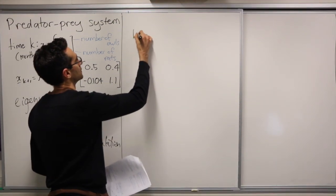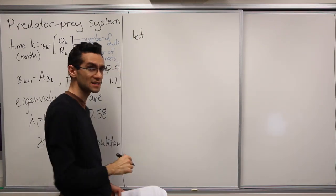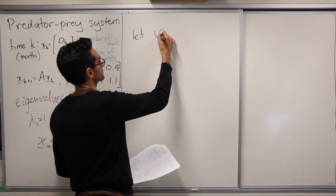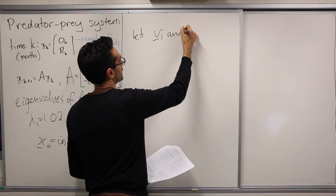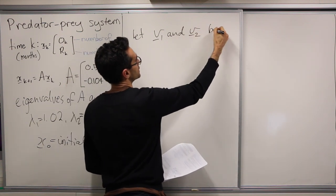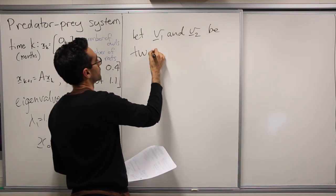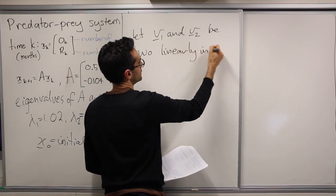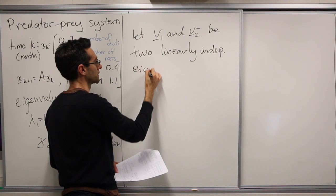So let v1 and v2 be two linearly independent eigenvectors of A.